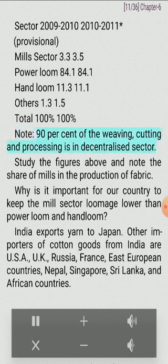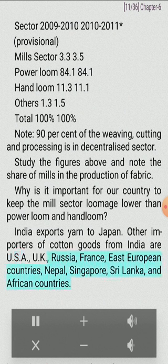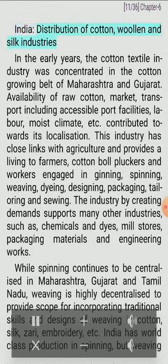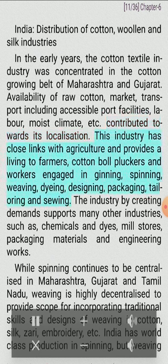Note: 90% of the weaving, cutting and processing is in the decentralized sector. India exports yarn to Japan. Other importers of cotton goods from India are USA, UK, Russia, France, East European countries, Nepal, Singapore, Sri Lanka and African countries. In the early years, the cotton textile industry was concentrated in the cotton-growing belt of Maharashtra and Gujarat. Availability of raw cotton, market, transport including accessible port facilities, labor, moist climate etc. contributed towards its localization.